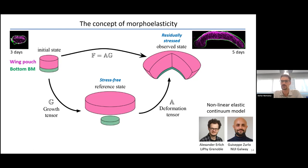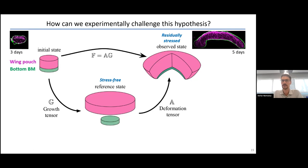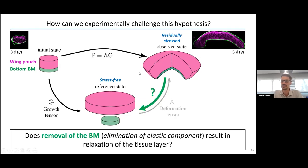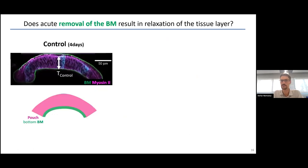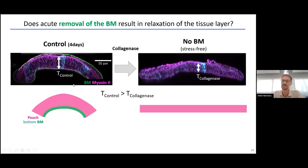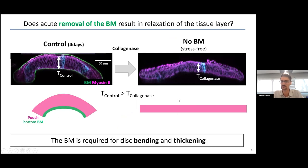To test this model, we exploited the fact that if the basement membrane constrains the tissue, removing it should allow the tissue to relax back toward the reference state. Experimentally, you take a bent wing disc with its basement membrane and incubate it in collagenase — a well-known enzyme that digests collagen. Upon removing the basement membrane, you see two things: first, the tissue flattens and you lose the dome; second, there is a striking reduction in tissue thickness. This clearly shows the basement membrane is a crucial component for tissue bending and thickening.